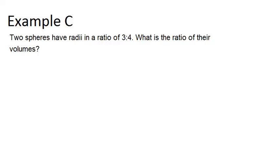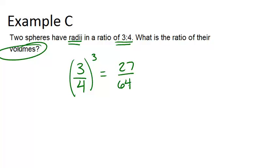In example C, it says two spheres have radii in a ratio of 3 to 4. What is the ratio of their volumes? So a radius is a linear measurement. So this really means that the scale factor is 3 over 4. Which means that the area ratio would be 3 over 4 squared, and the volume ratio, which is what the question is asking about, would be 3 over 4 cubed, or 27 over 64.